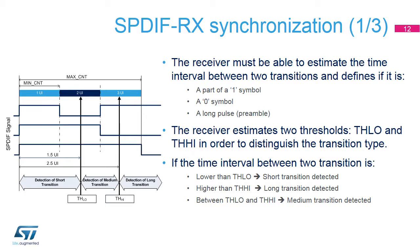If the time interval is lower than TH low, a short transition is detected — note that two consecutive short transitions correspond to symbol one, but can also be part of the preamble pattern. If the time interval is between TH low and TH high, a medium transition is detected — a medium transition corresponds to symbol zero, but can also be part of the preamble pattern. If the time interval is higher than TH high, a long transition is detected, and a long transition is always part of the preamble pattern.